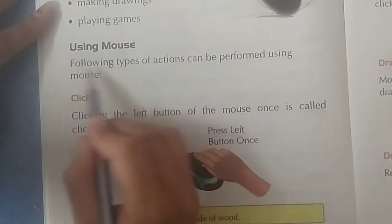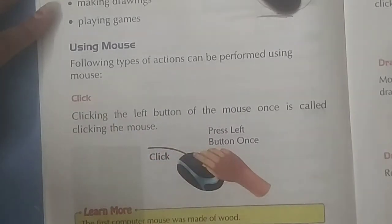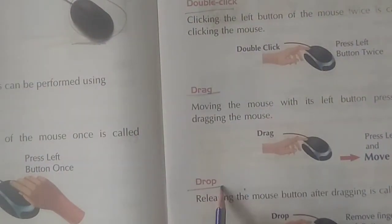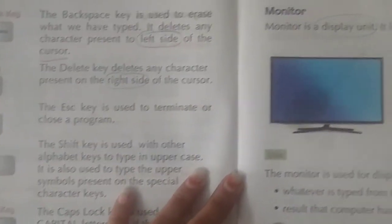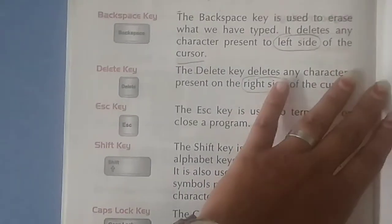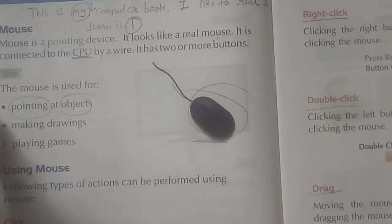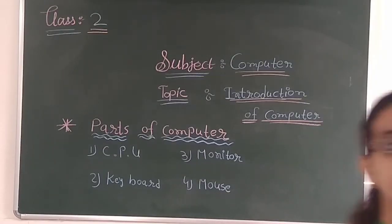Following types of actions can be performed using the mouse: click — which is of two types — right click, double click, and drag and drop. We will learn about all of these in our next lecture. In the current lecture, we only learned about the monitor, CPU and mouse — what is the monitor, what is the CPU, and what is the mouse. The uses of the mouse we will learn in our next lecture.